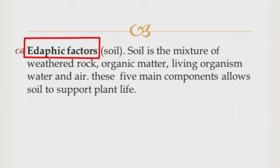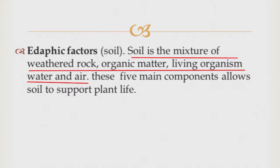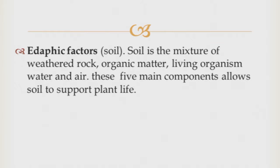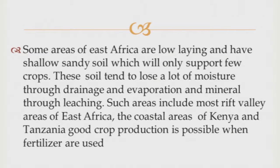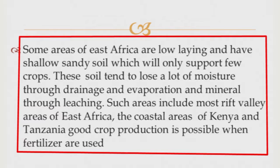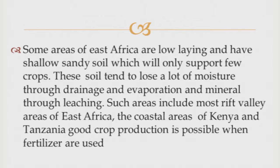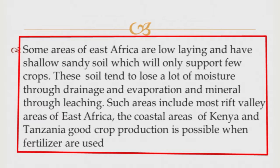Another factor is the edaphic factor, which means soil. Soil can be defined as the top layer of the earth's surface where crops derive nutrients and anchorage. Soil can also be defined as a mixture of weathered rock, water, living organisms, air, and humus — those are the components of soil. Different parts have different soil types; some have fertile soil and some have heavy clay soil. The soil type which occurs in different parts of the country does affect the distribution of crops and animals.